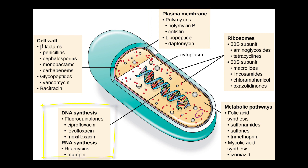The third target is nucleic acid synthesis. At first, it would appear that DNA or RNA synthesis would be a bad choice, since prokaryotes and eukaryotes both have DNA and RNA. However, there are differences that make this a good target.